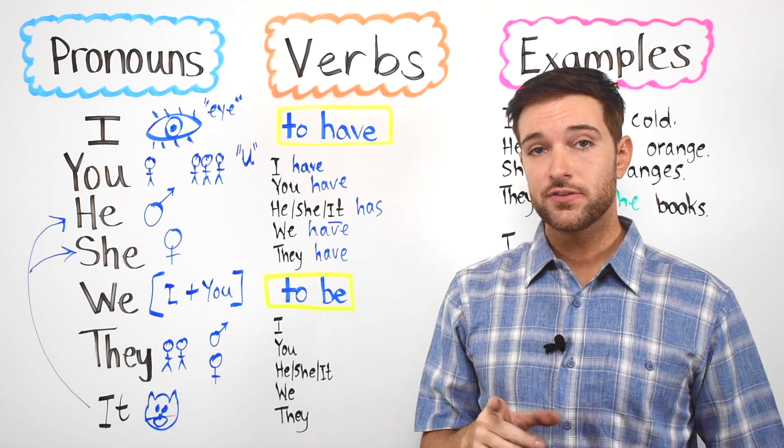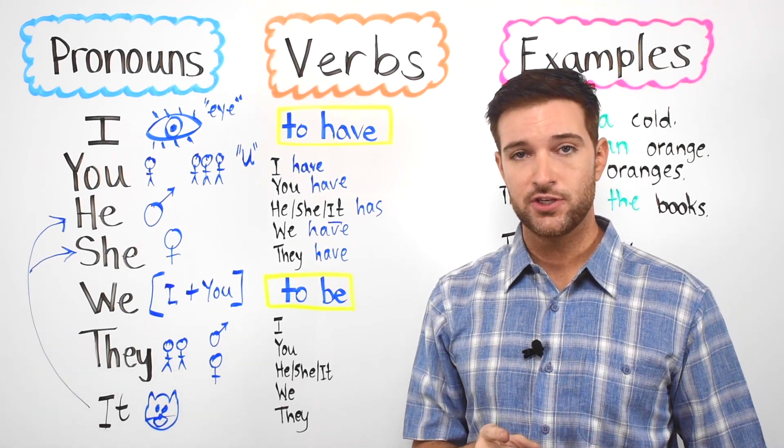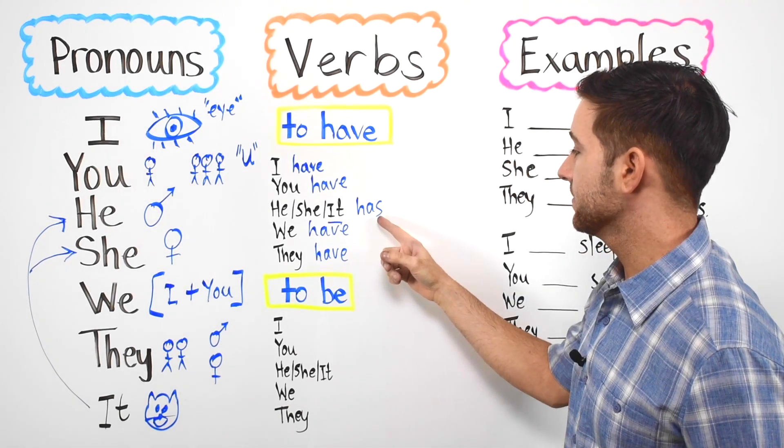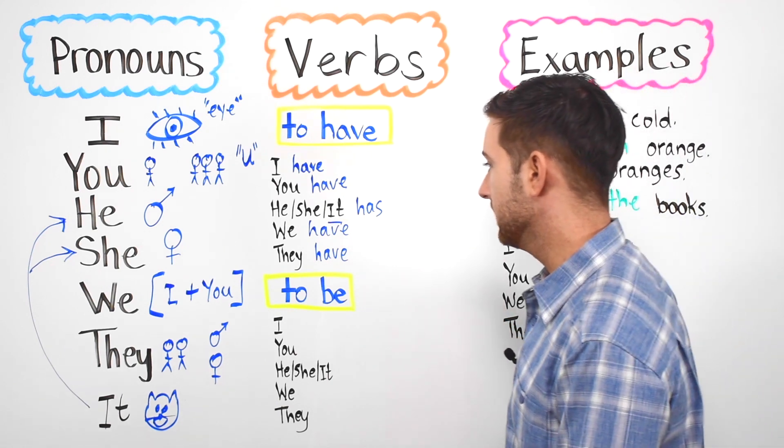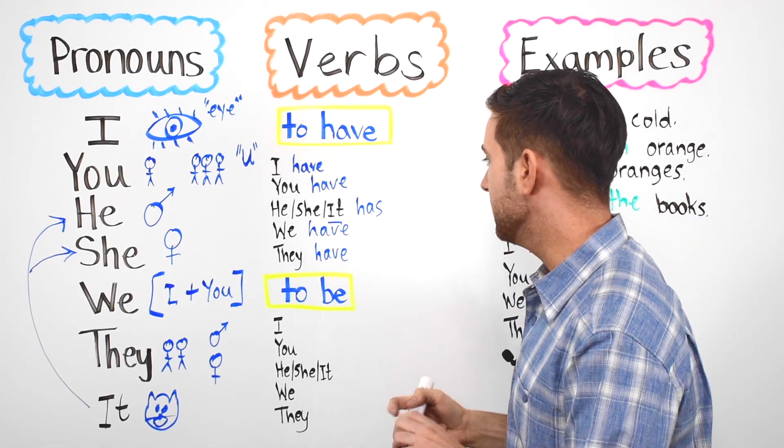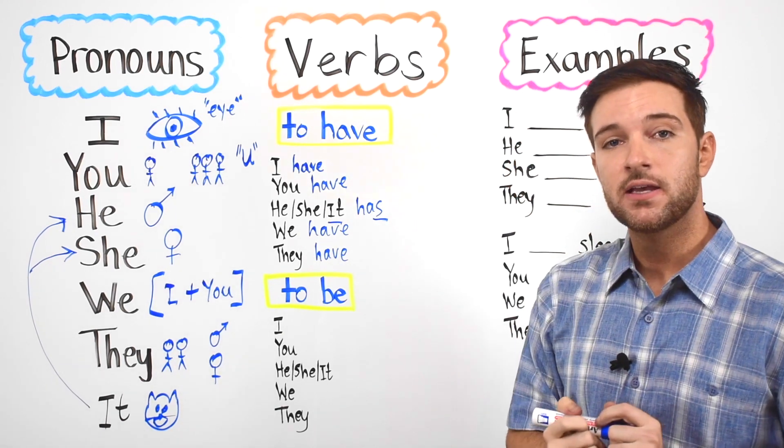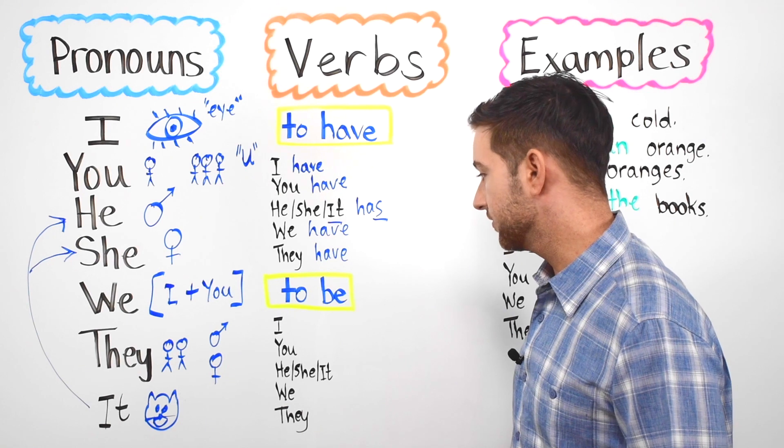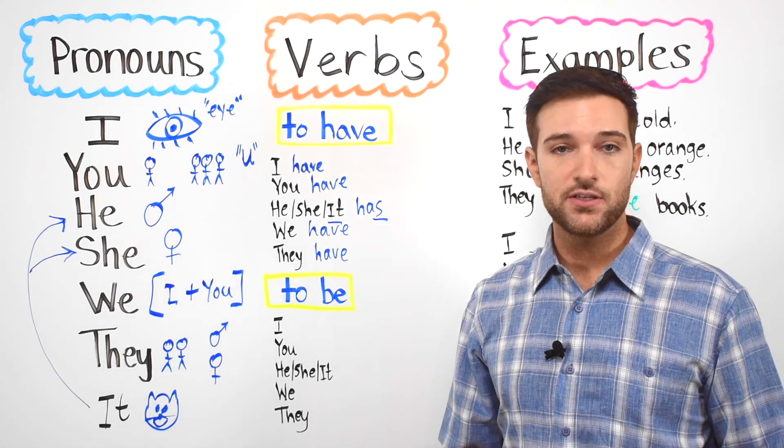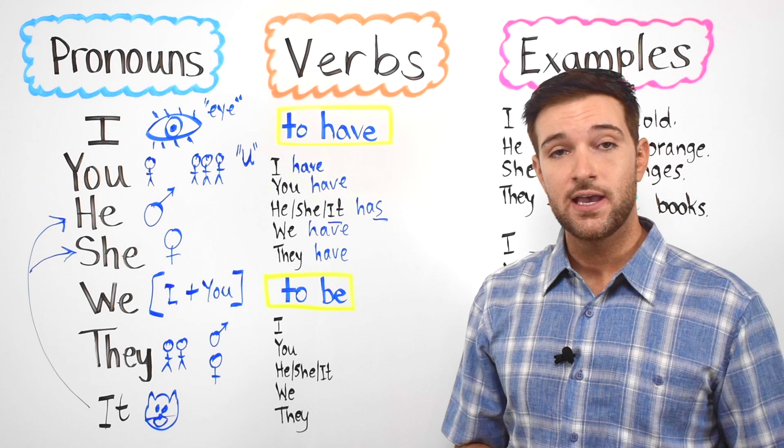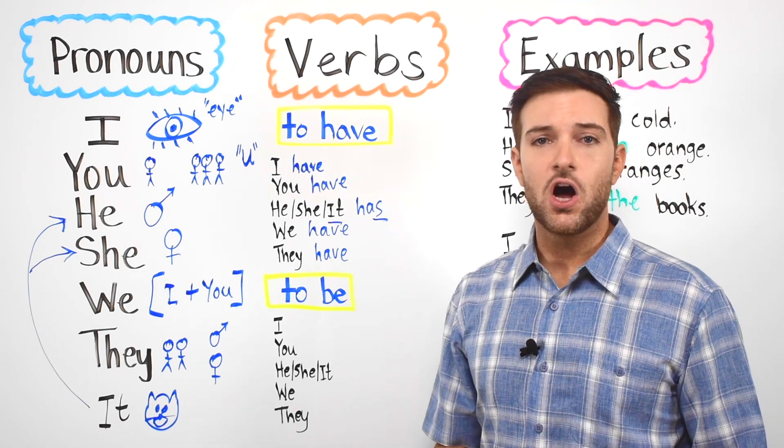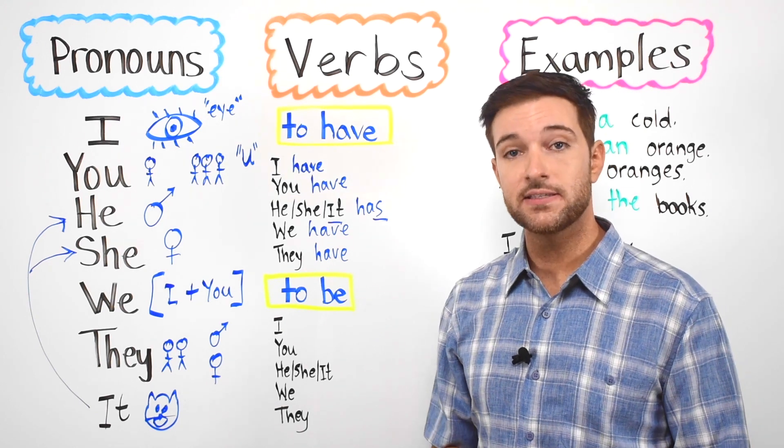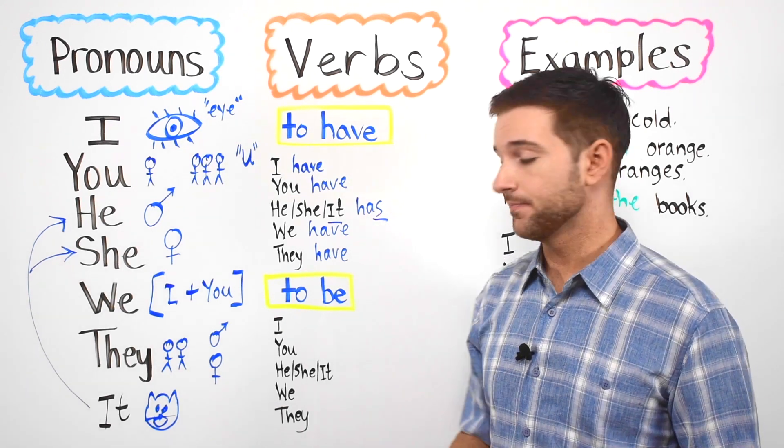Also make sure that you notice that there is only one change in the conjugation of the verb to have. And it's found in the third person singular. Has with an S. He, she, it has. All right. Now let's look at the verb to be. In English the verb to be is the most commonly used verb in the English language. And we use this in all sorts of tenses. It has an irregular conjugation in both the present tense and in the past tense. Let's look at it.